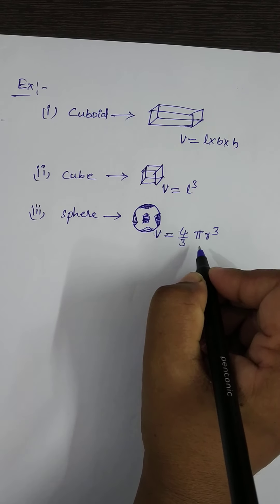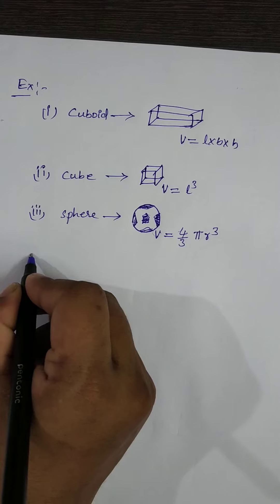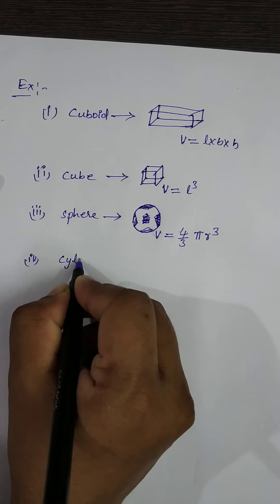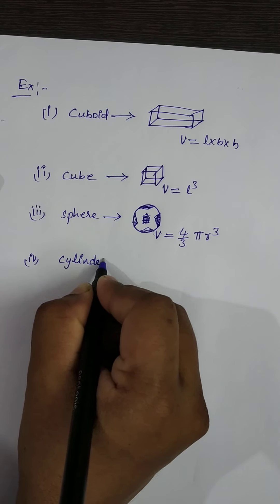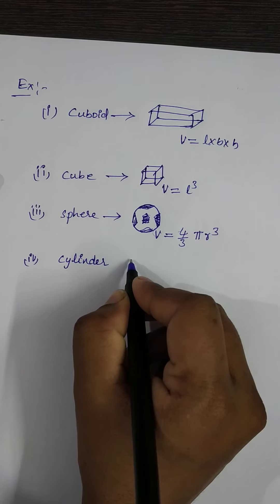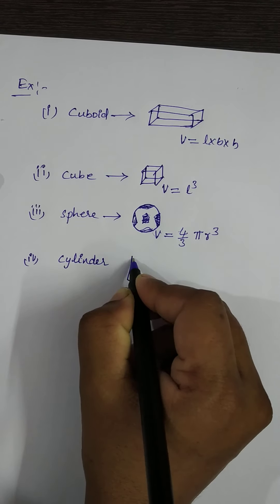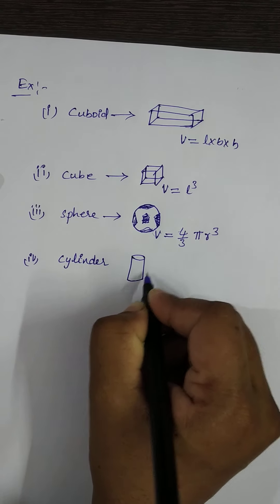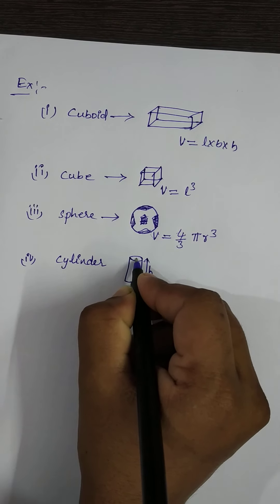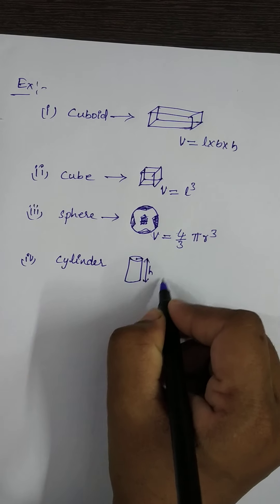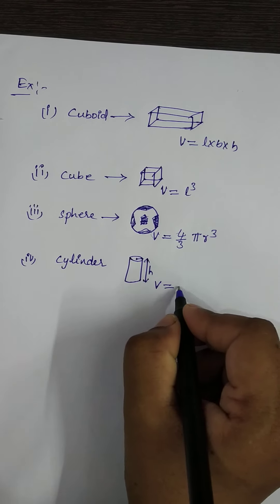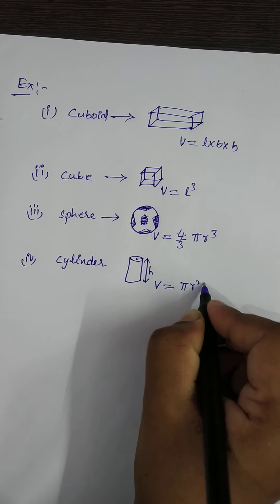The fourth example is a cylinder. The diagram shows the height of the cylinder and the radius. The formula for volume of a cylinder is: Volume = π r² h.